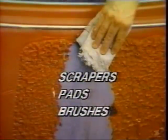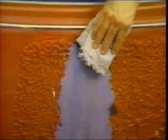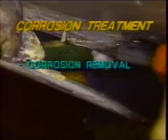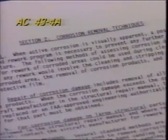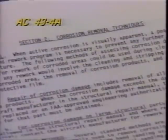Scrapers, pads, or brushes can be used to remove stubborn paint. Use more paint remover as needed. Once the paint and stripper are removed, you can begin repairing the damage that corrosion has caused. First, you must remove all of the corrosion product and damaged metal. The corrosion removal procedure will be different for each metal or component, but this video will provide you with a good working foundation. Refer to AC 43-4A for material or component specifics.